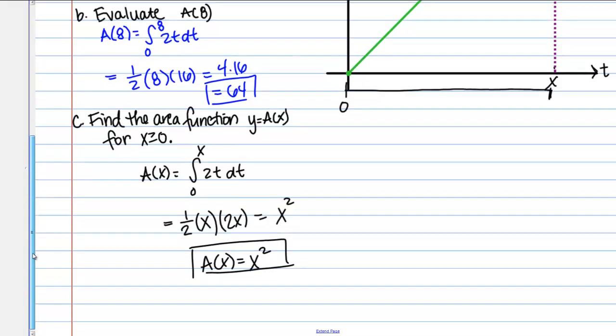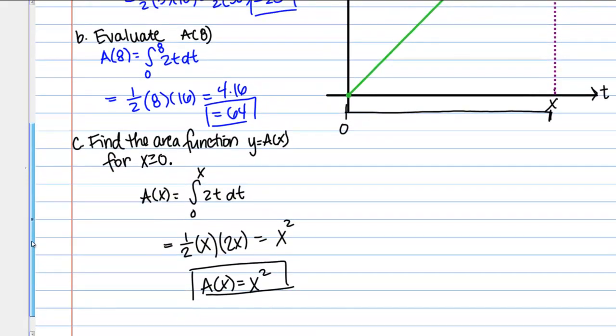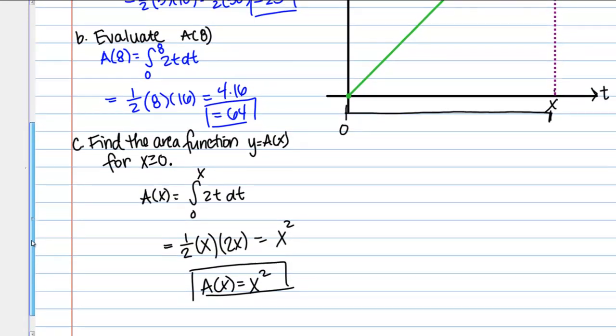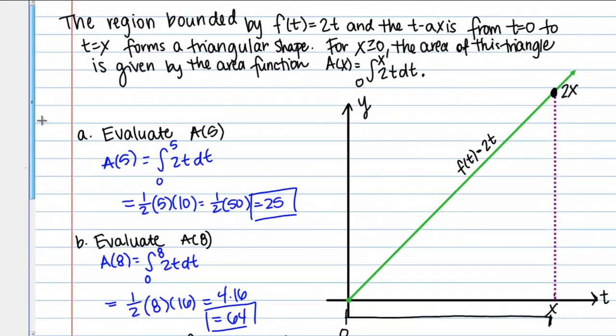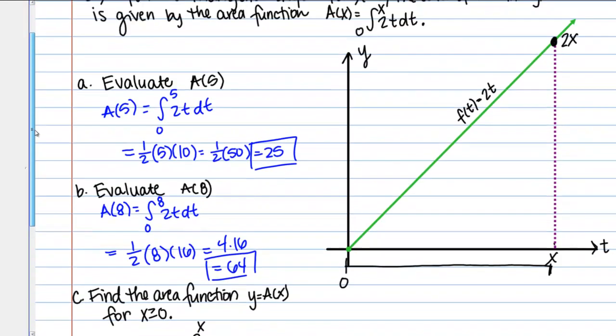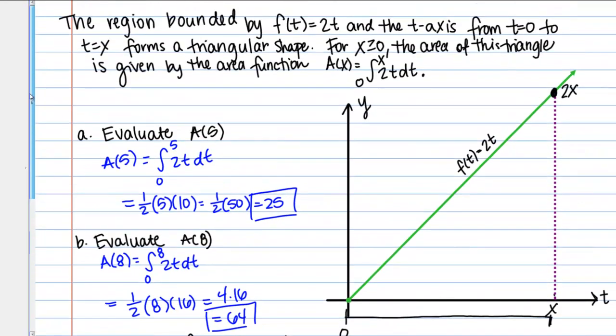Notice one really important thing here. The area function is x². The original function was 2t. The variables are a little bit different because if we use x's for both, it gets a little confusing. Ignore the difference in variables for a second. Just think about the functions: x² and we'll call it 2x.